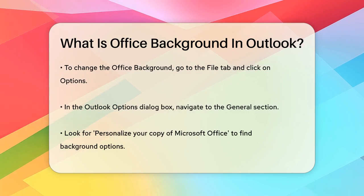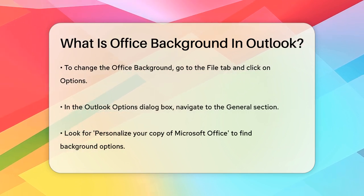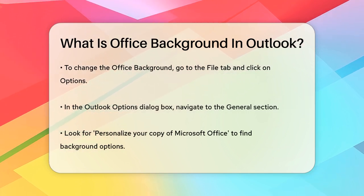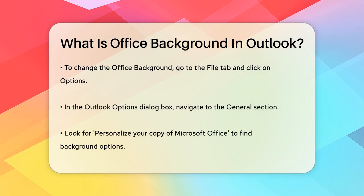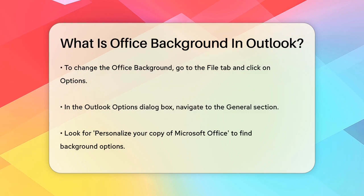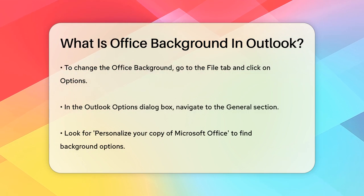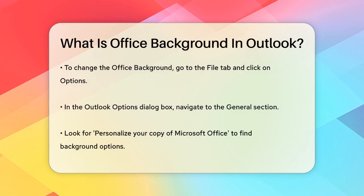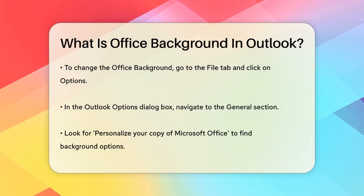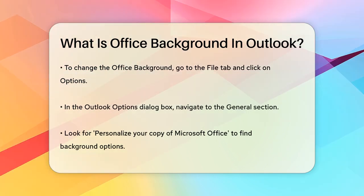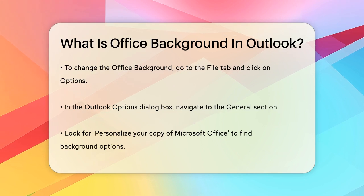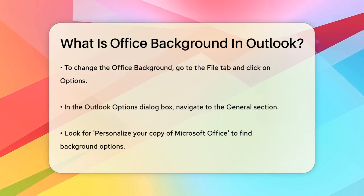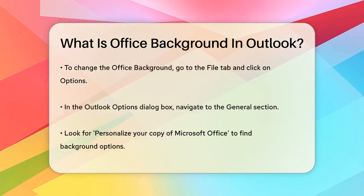To change the Office Background in Outlook, you need to go to the File tab, then click on Options. In the Outlook Options dialog box, navigate to the General section and look for Personalize your copy of Microsoft Office.